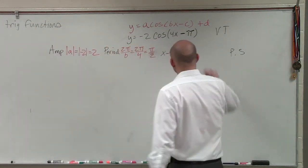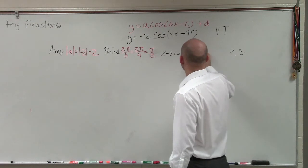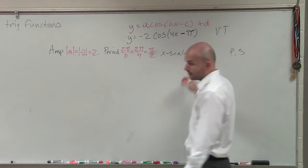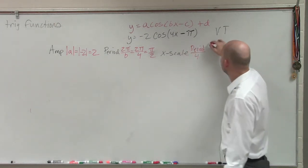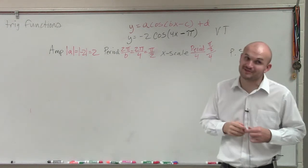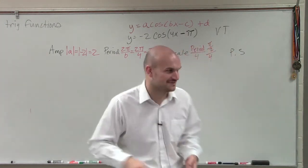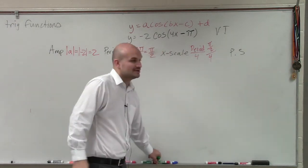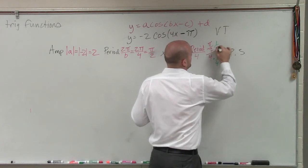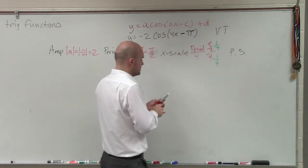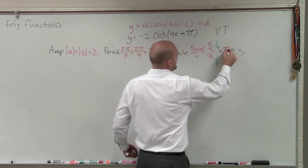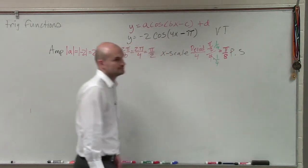Next one, x scale. x scale told you to take the period and divide it by 4. So therefore, I have π halves divided by 4. And if you guys remember, we've been doing a lot of this, taking fractions, dividing them. So we guys hopefully shouldn't remember to multiply by the reciprocal. So therefore, that multiplies to 1 and I'm just left with π over 8.